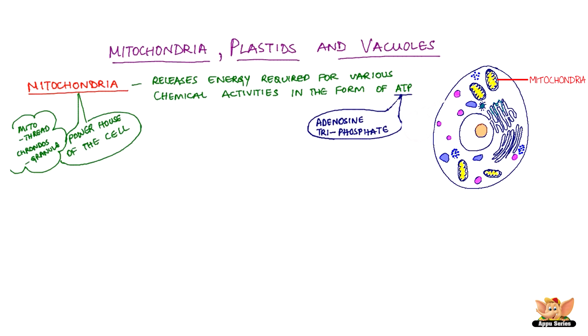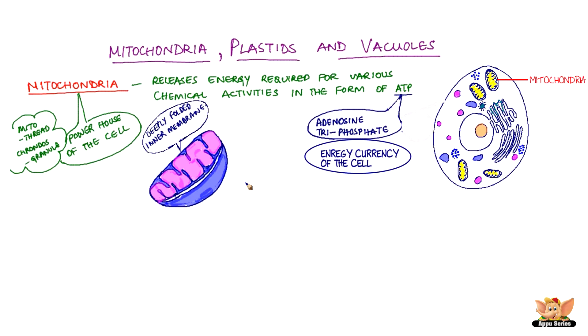ATP stands for adenosine triphosphate, also known as the energy currency of the cell. The inner membrane of the mitochondria is deeply folded, which provides a large surface area for ATP-generating chemical reactions.